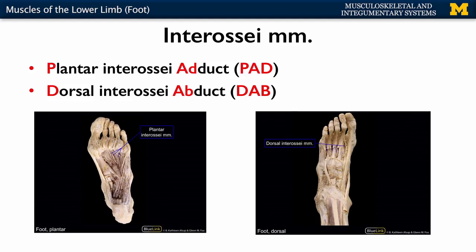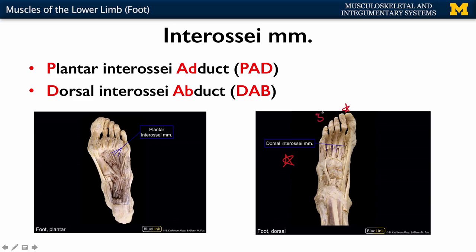Lastly, as you move to the deepest layer of the plantar surface muscles, you have the interossei — similar to what we had in the hand. You're going to have the plantar interossei allowing for adduction, or moving back, and the dorsal interossei, which you can see in this picture, allowing for abduction. The first digit is your great toe, or big toe, and the fifth digit is your smallest toe. In terms of the plane by which these muscles abduct or adduct, it's actually going to be the second digit. So abduction means moving away from the second digit, and adduction means moving back towards the second digit — slightly different from the hand, where it's the third digit.